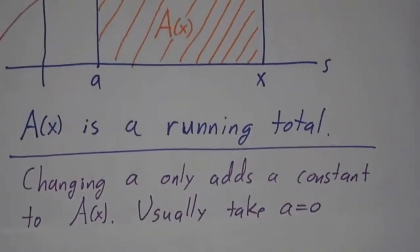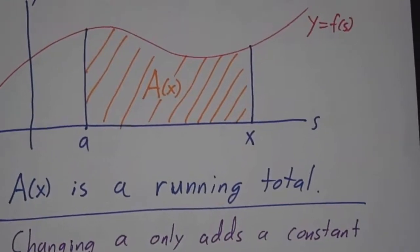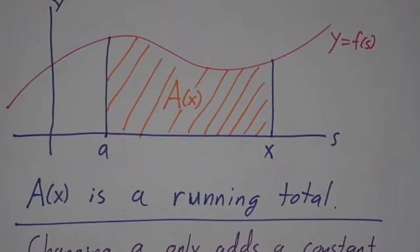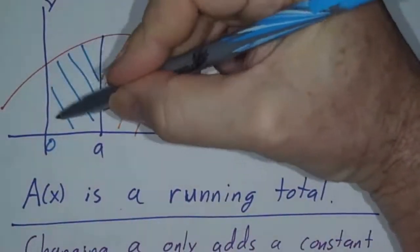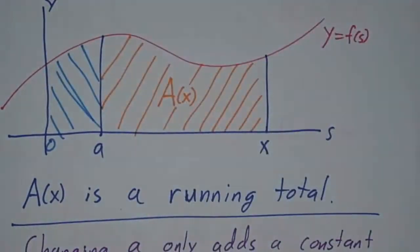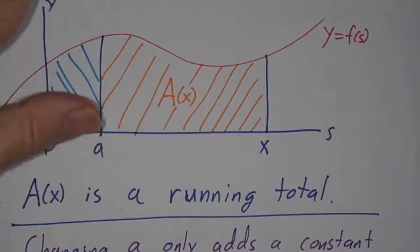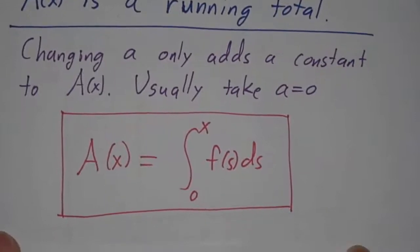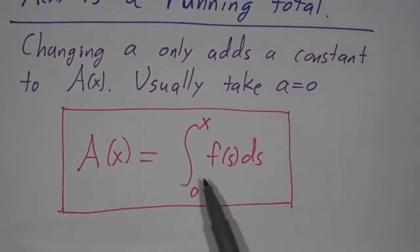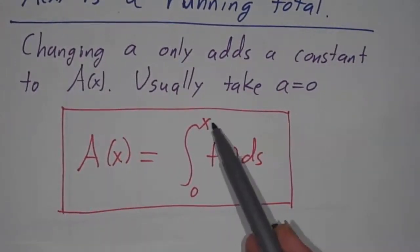Now, if you change your starting point, that basically just adds a constant. So for example, if instead of starting at a, we started at 0, that would just add this much more extra area. It would add a constant to A(x). And we usually do that. We usually take our starting point to be 0, and then we say A(x) is the integral from 0 to x of f(s)ds.